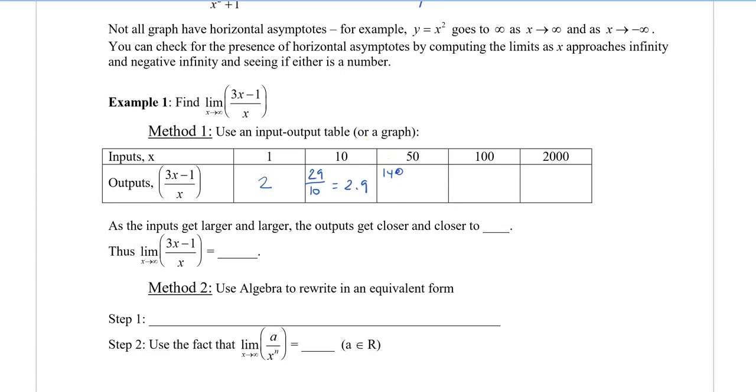When I plug in 10, I get 29 over 10, which is 2.9. I plug in 50, I get 149 over 50, which is 2.98. For 100, I get 299 over 100, which is 2.99. Plug in 2,000, I get 5,999 over 2,000, which equals 2.9995. As inputs get larger and larger, the outputs are getting closer and closer to the number 3. So the limit of this function as x approaches infinity is equal to 3.